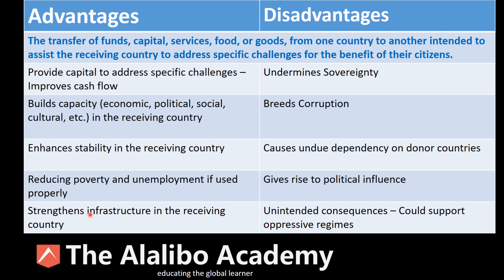The last advantage is that foreign aid strengthens infrastructure — bridges, roads, airports, telecommunication systems, water systems, and health and education institutions. Billions of dollars, if used properly, can build and maintain infrastructure: stadiums, parks, and public spaces that relieve stress and allow citizens to interact and build community, keeping society functional and effective.